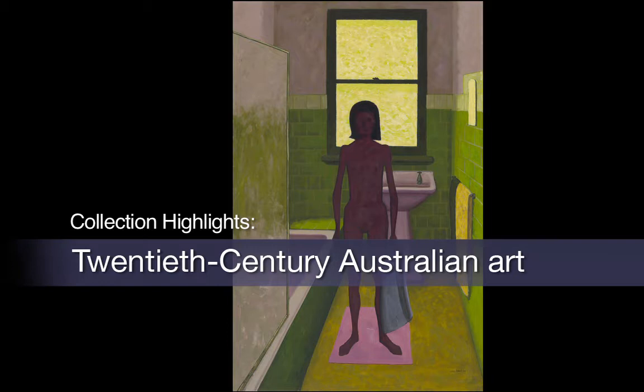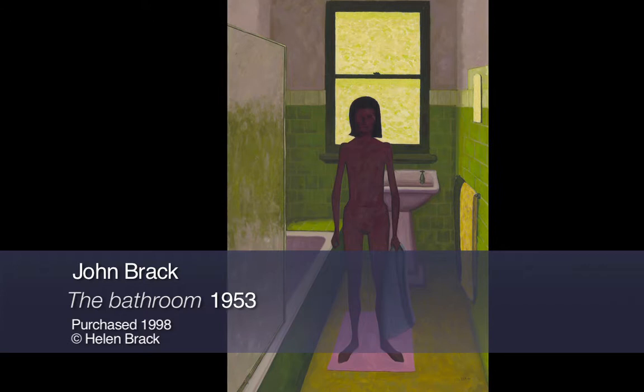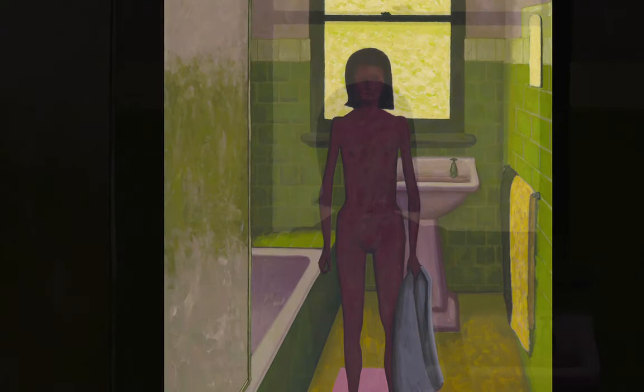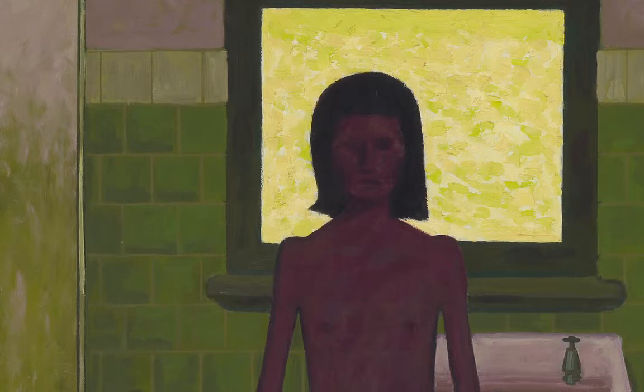Although it is surely one of the least sensuous nudes in the history of Australian art, the formal complexities and intense colour harmonies of The Bathroom make it one of the most visually seductive and compelling of John Brack's paintings. A small, angular nude stands squarely looking out at the viewer. She's little more than a dark silhouette in front of a glowing window, the focus of our attention.